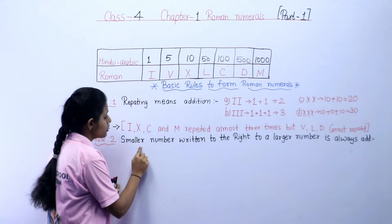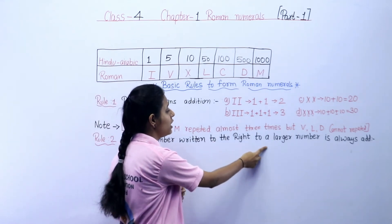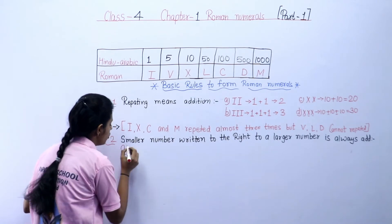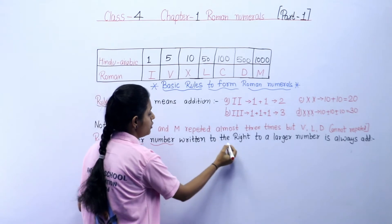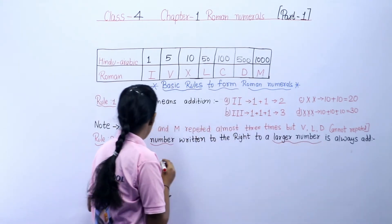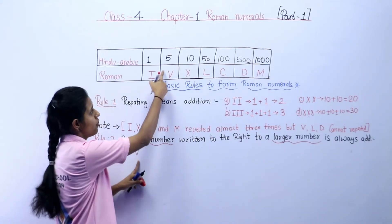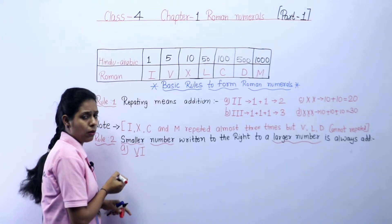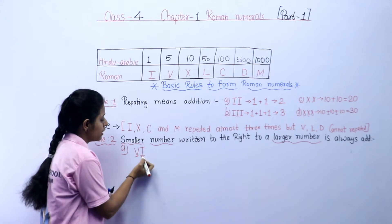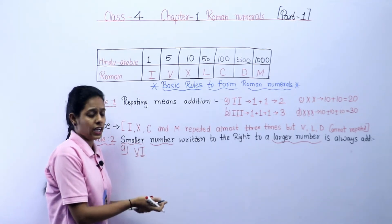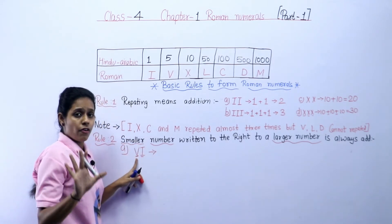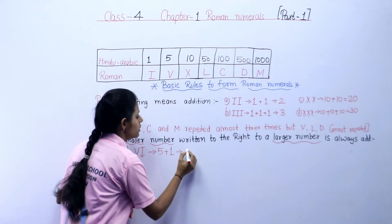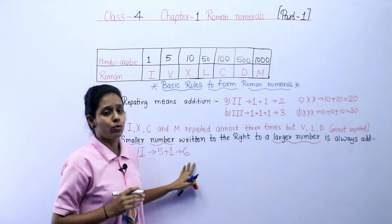Rule number two: a smaller number written to the right of a larger number is always added. For example, VI — V means 5, which is the bigger number, and I means 1, which is the smaller number. The smaller number is to the right side, so we add: 5 plus 1 is equal to 6. This is the symbol used to write 6.